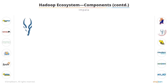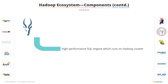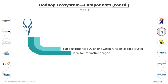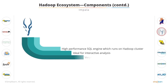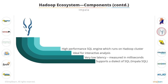You can also use Impala to analyze data. It is an open-source, high-performance SQL engine that runs on a Hadoop cluster. It is ideal for interactive analysis and has very low latency, measurable in milliseconds. Impala supports a dialect of SQL, so data in HDFS is modeled as a database table.